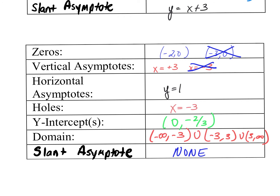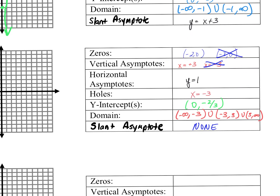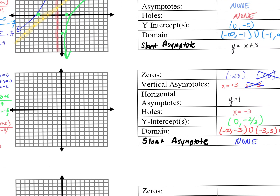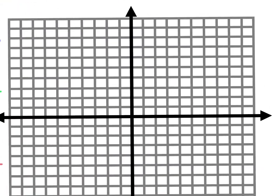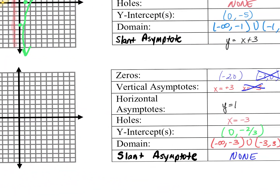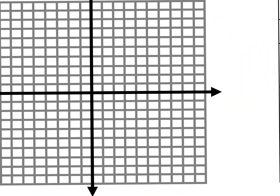Does this happen a lot? No. But I want you to be aware in case it does. So let's graph. The first thing to plot is your asymptote — in this case I only have one now, at x equals positive 3.